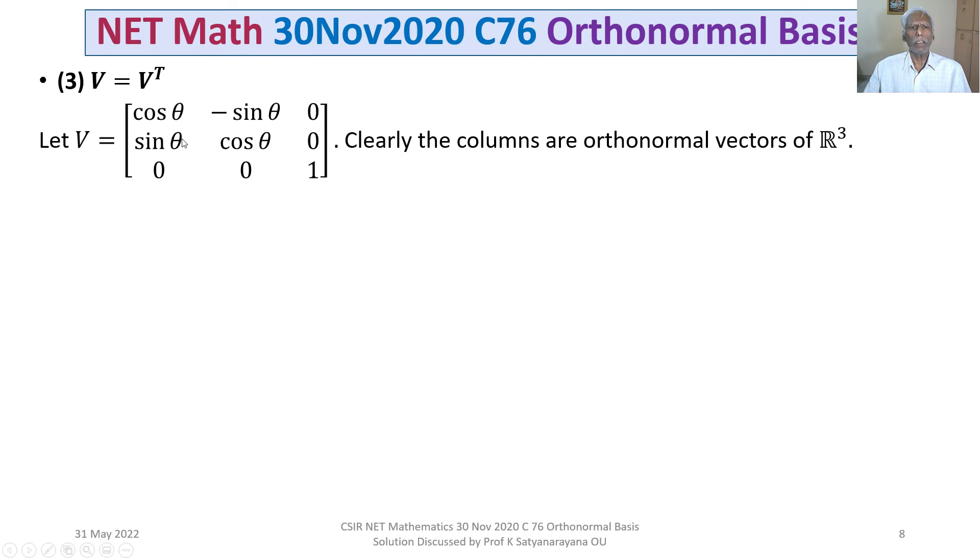Clearly, the columns are orthonormal vectors of R³. The norm of each column is 1 and the inner product of any two different columns is 0.